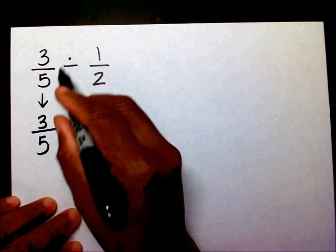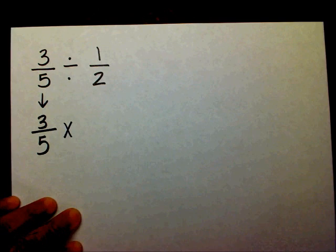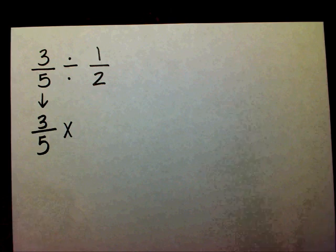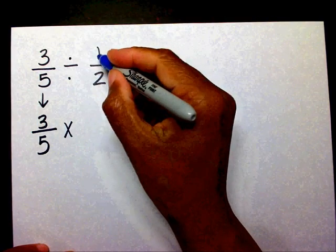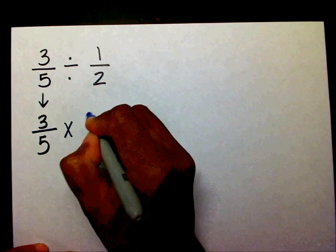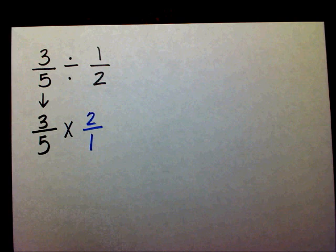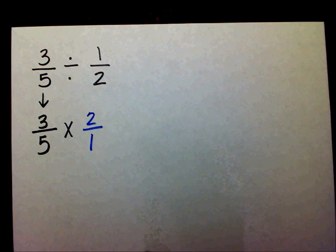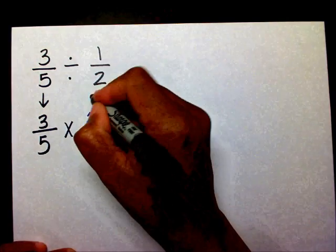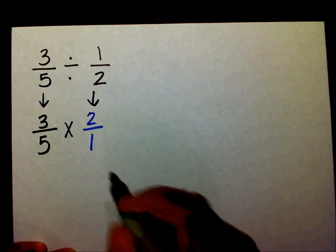Now, you want to change your division to multiplication. Then, you want to take the reciprocal of one-half. The reciprocal of one-half is two over one. And once you do that, that creates a multiplication problem, just like the multiplication problems we worked before.